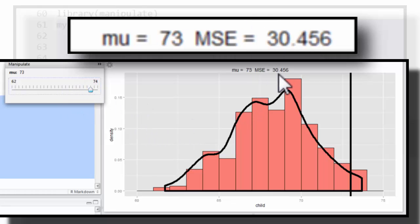If I move it all the way over here, this mean squared error, this measure of imbalance gets quite large. This is just illustrating the point that the empirical mean is going to be the point that balances out the empirical distribution. And we're going to use this to talk about the population mean, which is going to be the point that balances out the population distribution.